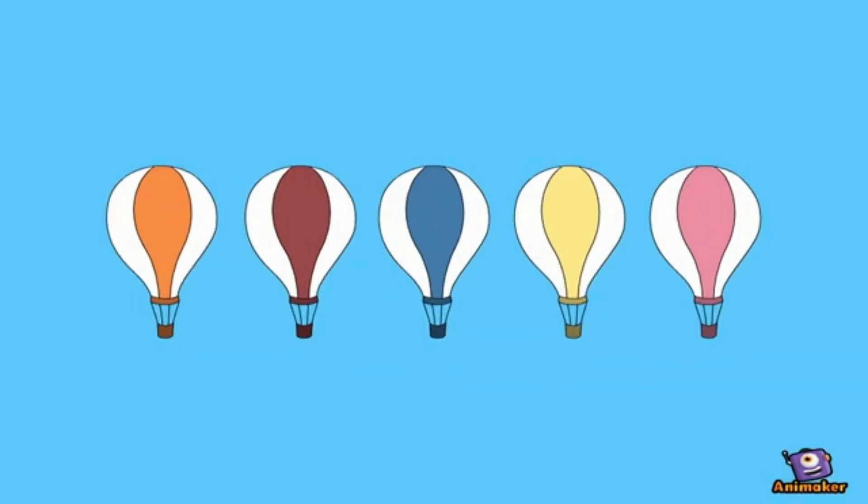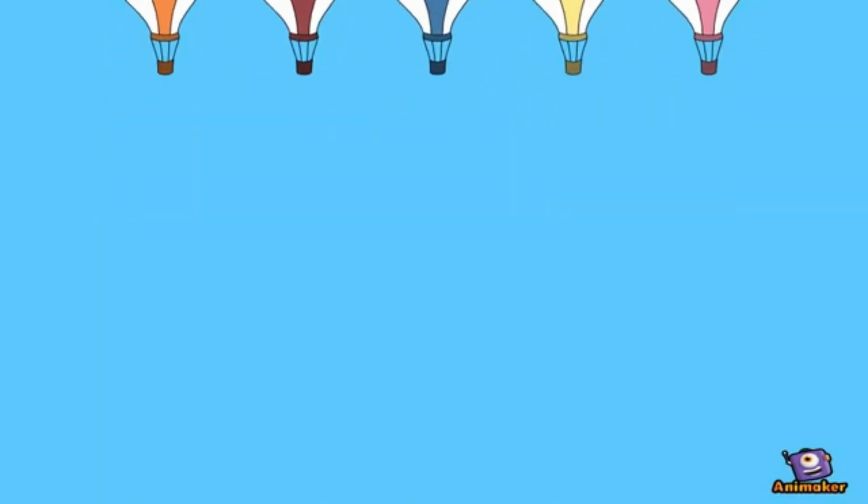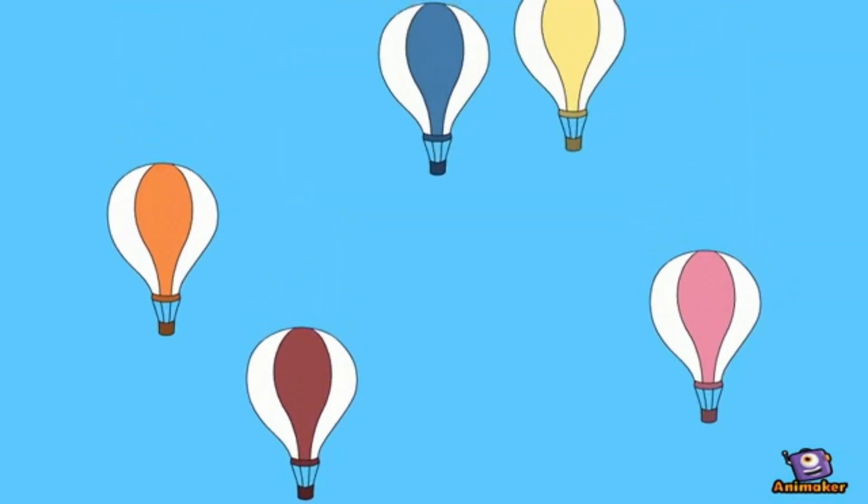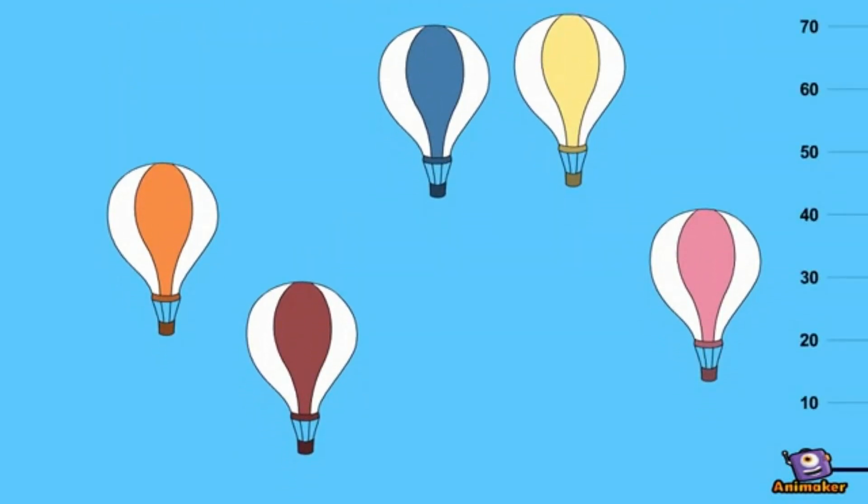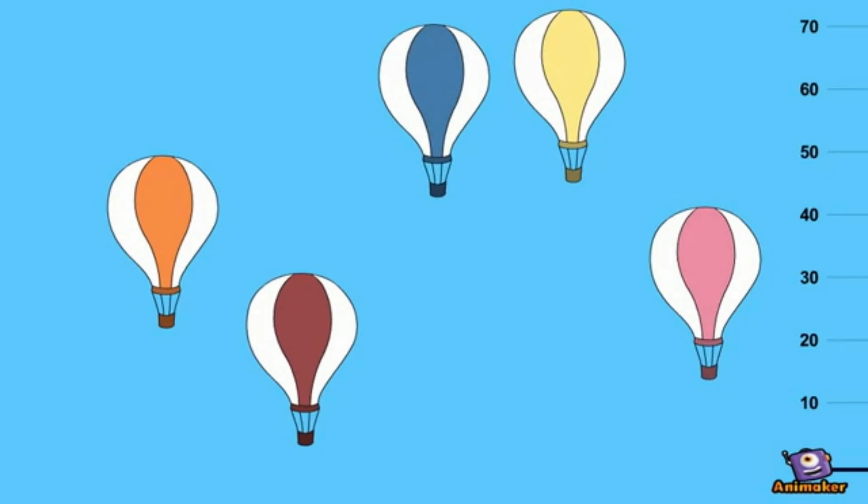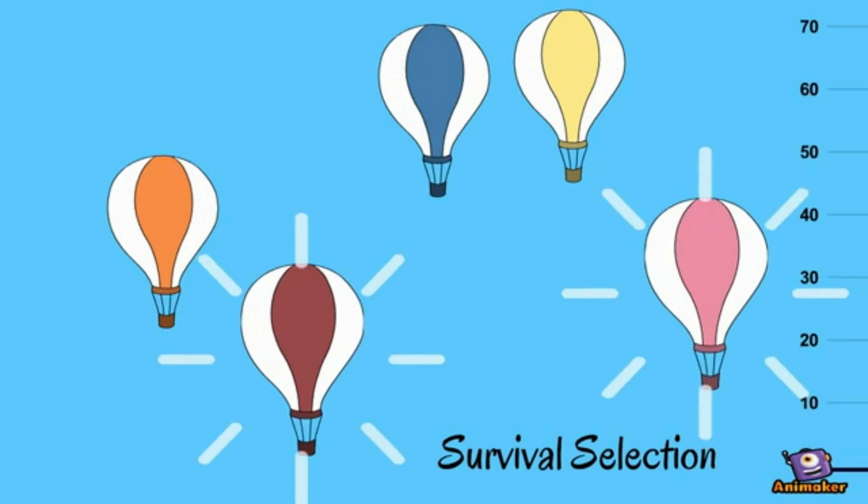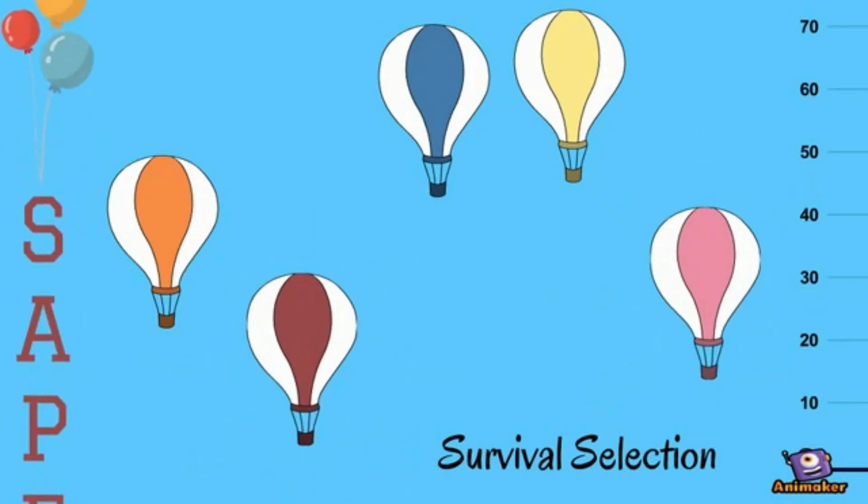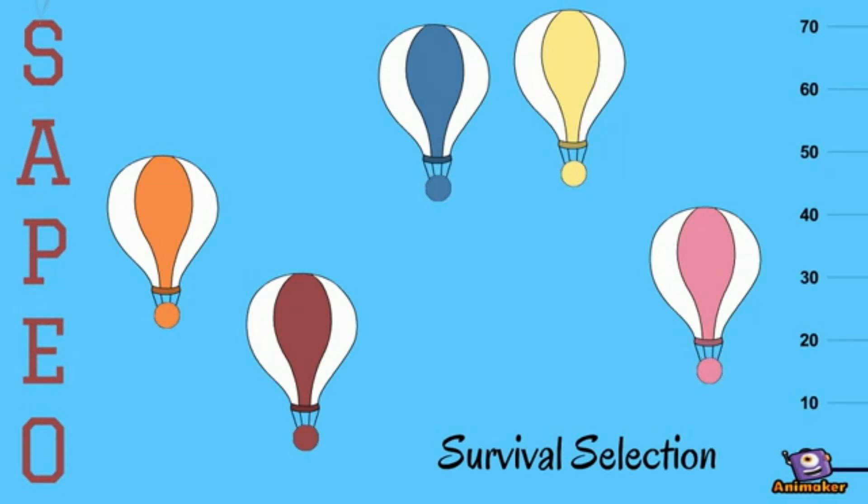So, imagine these balloons represent the solution to an optimization problem and the altitude of the cabin is the fitness value. The higher the balloon, the better. Now, if we have a population size of 3, we would get rid of the two lowest balloons during survival selection. However, in SAPEO, we do not actually know the exact location of the cabins.